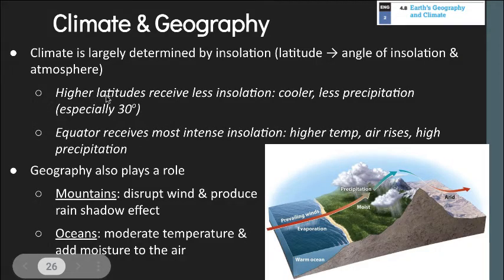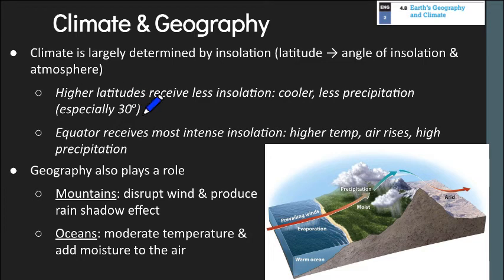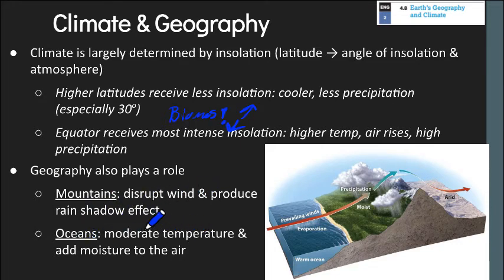Talking about climate and geography: the landscape itself, much like we discussed in watersheds, affects how water moves and can change how climate factors work. Latitude or angle of insolation — higher latitudes receive less sunlight, making them cooler with less precipitation, while the equator has higher temperatures, more evaporation, and more precipitation. This directly affects the distribution of our biomes. Geography also plays a role: mountains can disrupt wind and produce rain shadows, and oceans help moderate temperatures and add moisture, making coastal regions a bit warmer depending on current.